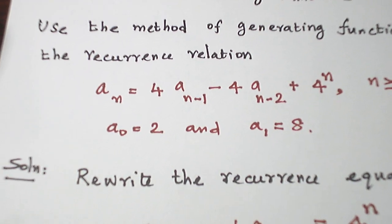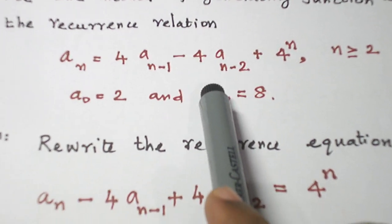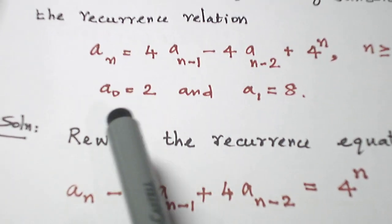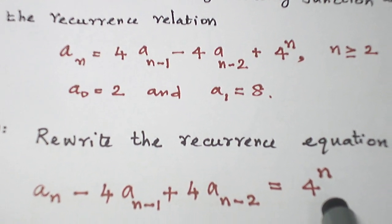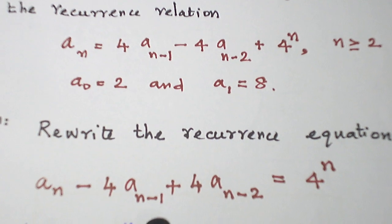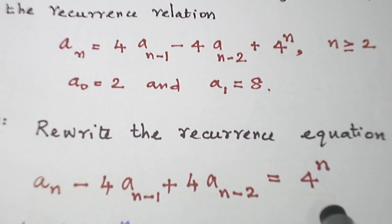So for the solution, first of all, let me rewrite the given recurrence equation. That is the sequence a_n terms, I bring it to the left hand side and the other sequence 4^n, I bring it on the right hand side. So I will get a_n - 4a_{n-1} + 4a_{n-2} = 4^n.